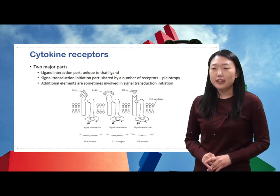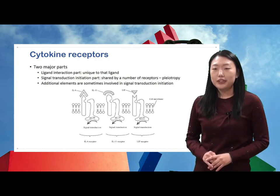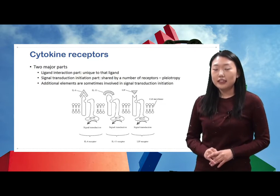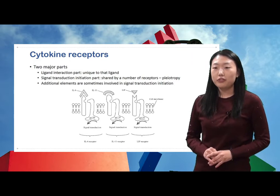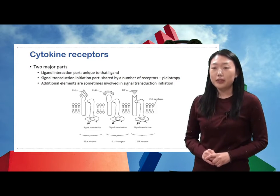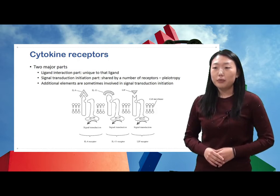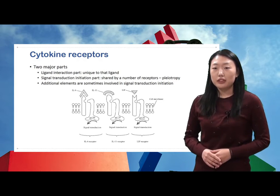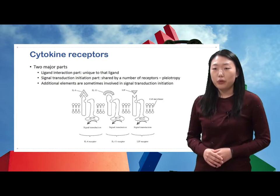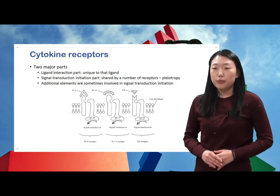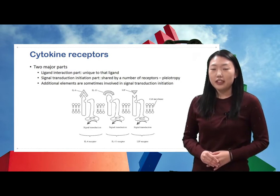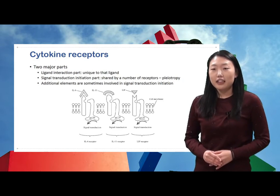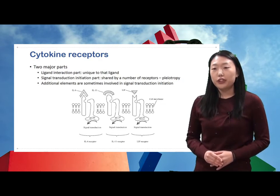The figure shows an example of cytokine receptors. Interleukin-6, interleukin-11, and LIF receptors are all composed of a ligand-specific binding domain and a separate subunit called GP-130. GP-130 initiates signal transduction, and it is identical in all three receptors.